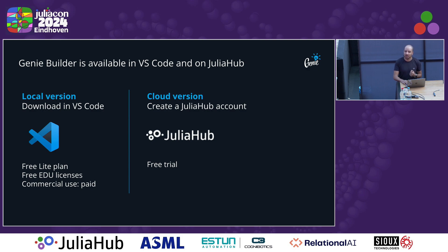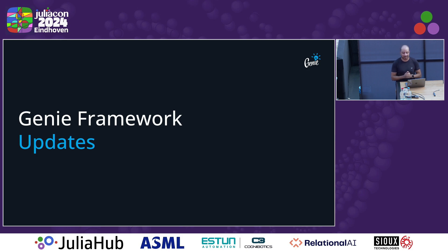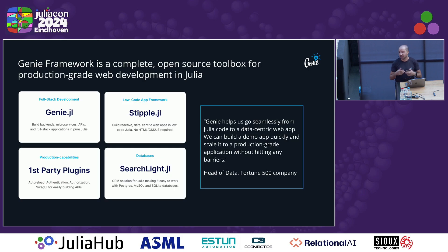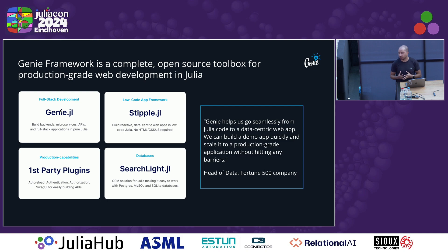We also have news regarding our open source stack, the Genie Framework. Genie Framework is a complete toolbox for creating production-grade data applications in pure Julia. It is composed of several packages, the main one being Genie.jl, which implements all the necessary features for server-side code — similar to Django in the Python ecosystem. Then we have Stipple, which implements a low-code API and UI library for creating interactive user interfaces.